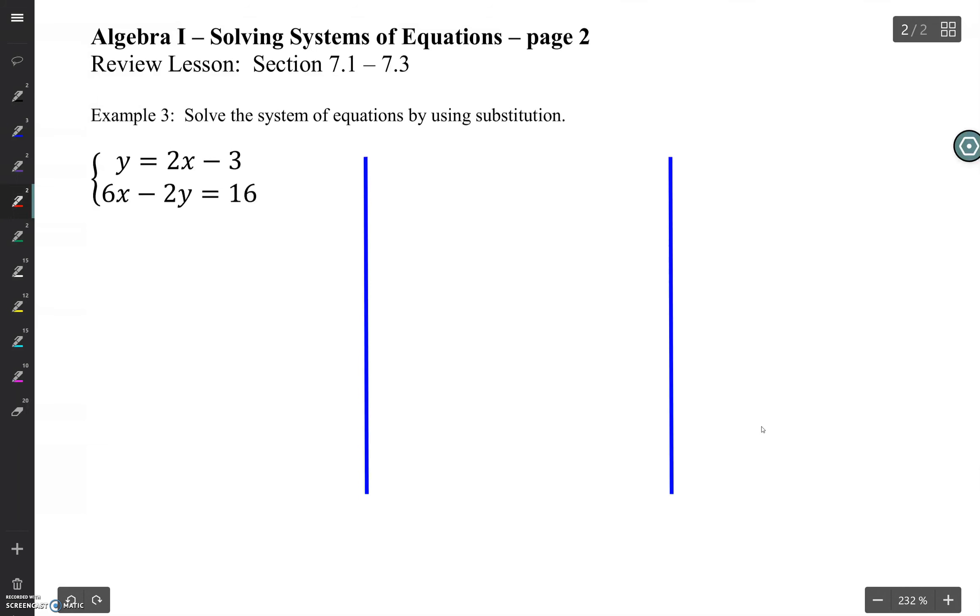As we look at our first equation, we see y equals 2x minus 3, and I'm going to circle that y equals 2x minus 3. I'm going to rewrite the second equation, and when I get to the value of y, I'm going to put a large parenthesis and set it equal to 16. And where that large parenthesis was, in the place of that y, I'm going to stick the value 2x minus 3.